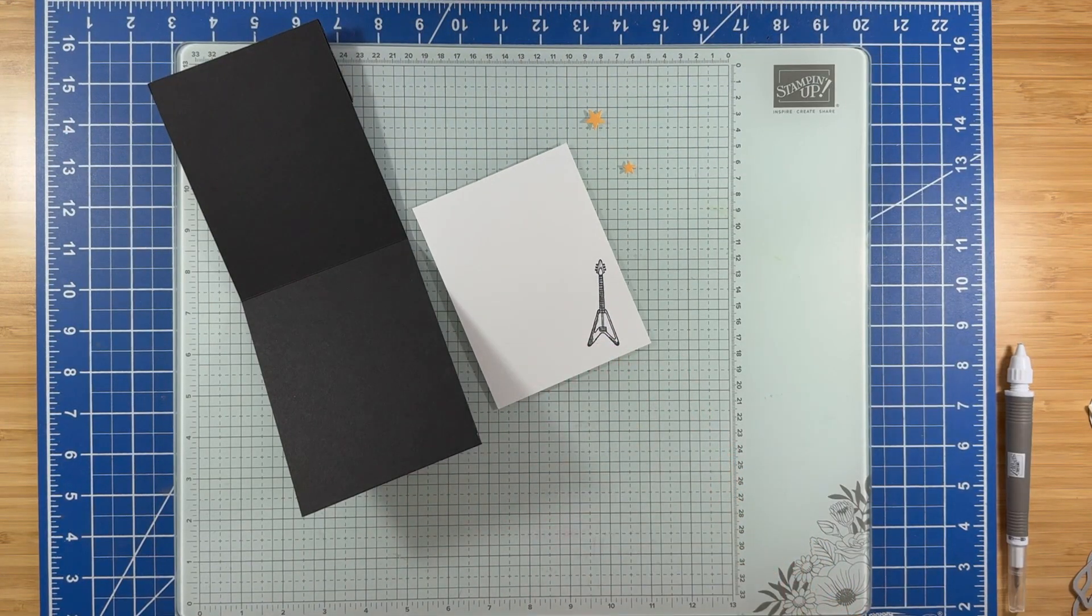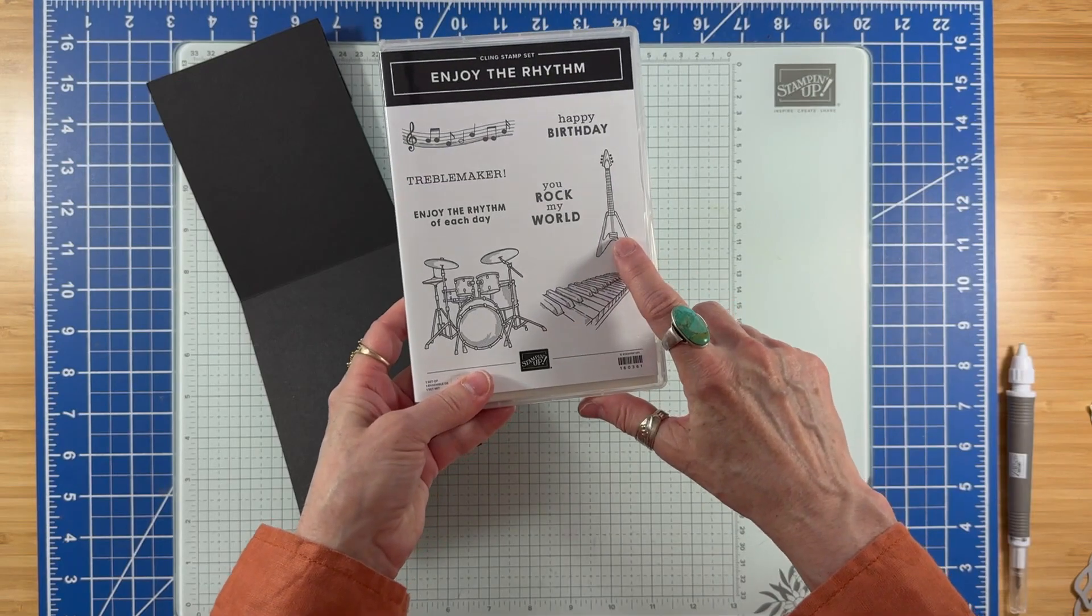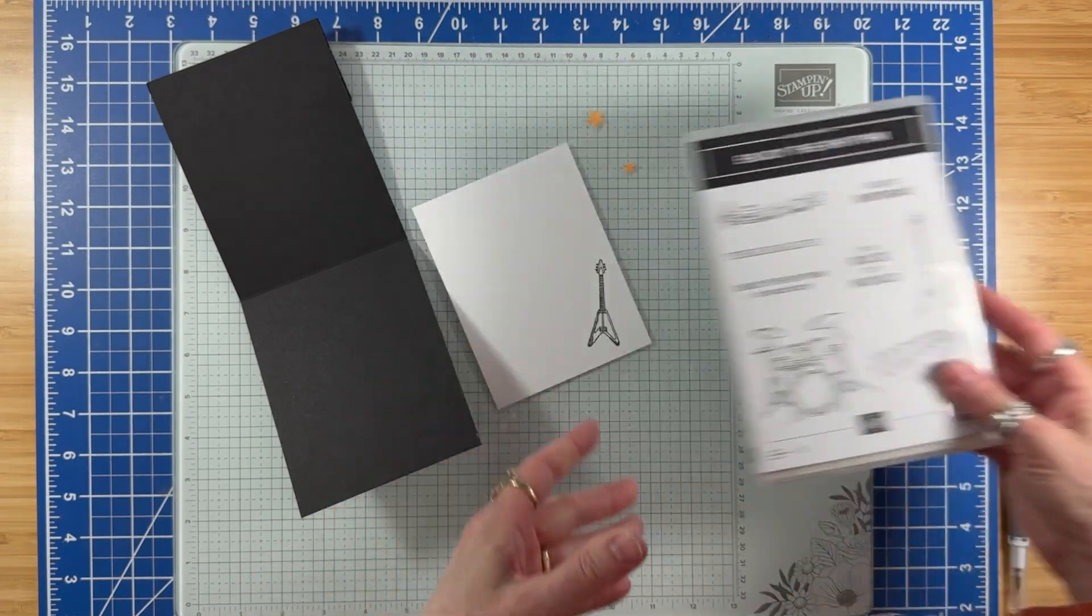For the inside of the card, I have a piece of basic white cardstock measuring 4.125 by 5.375 inches, and I stamped it with this guitar image from the Enjoy Your Rhythm stamp set.